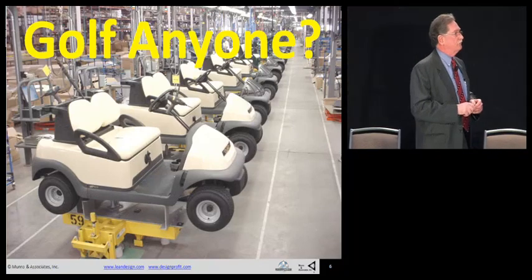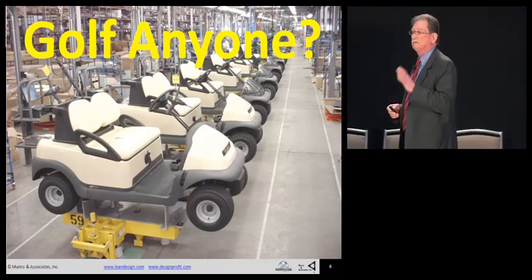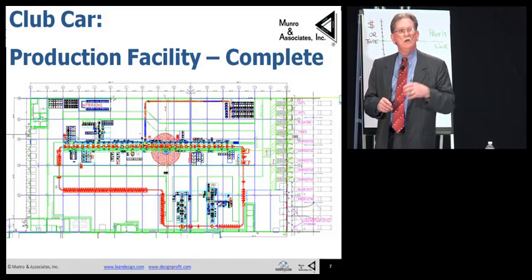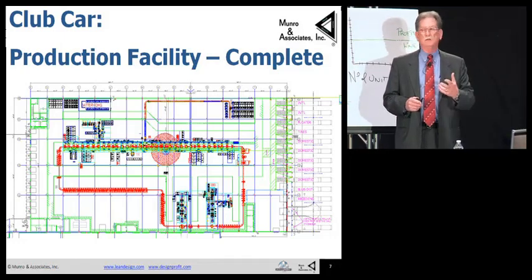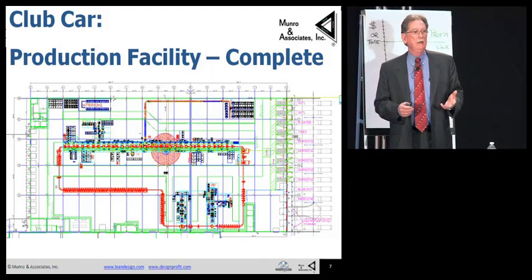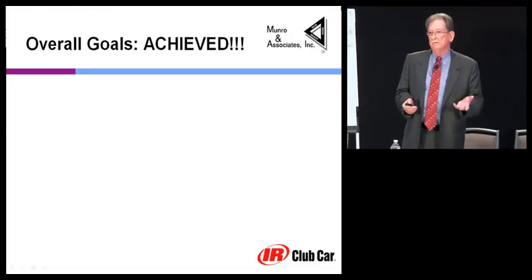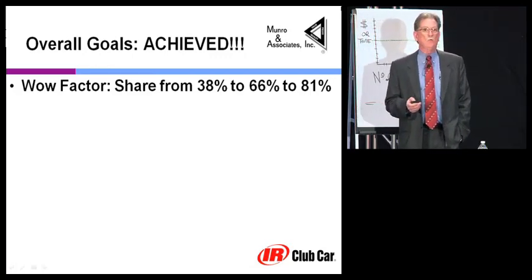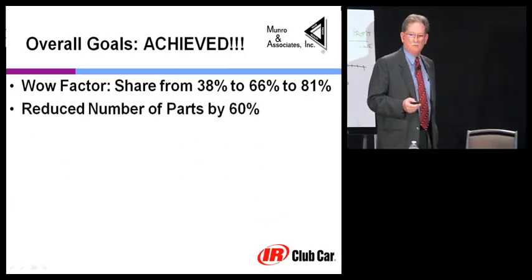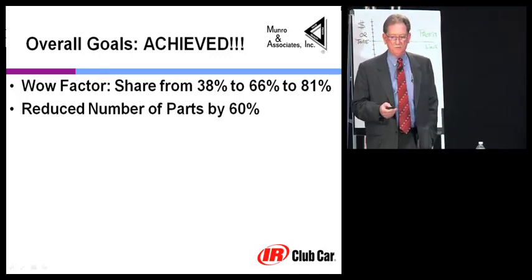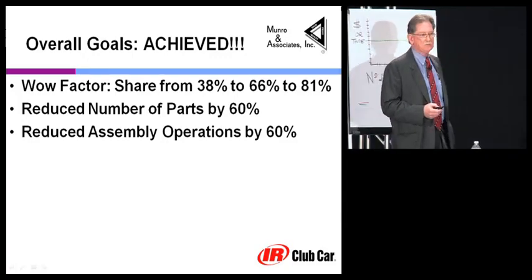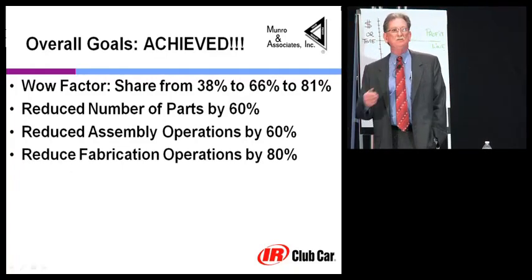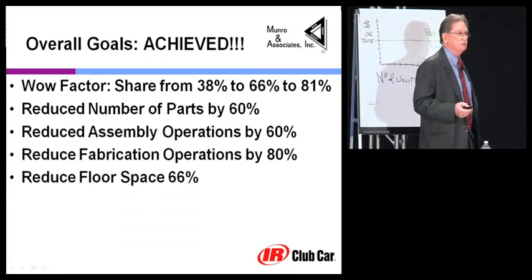For this product — the Precedent golf cart from Club Car — we did the assembly lines, and they worked really, really well. This new approach puts out twice the product that the old one did, and it does it in a third of the space. They went from 38% market share to 66 — actually to 81% for a while. Manufacturing was improved because it got rid of 60% of the parts. They reduced assembly operations by 60% — not by outsourcing, but by doing it a little bit smarter. They got rid of fabrication operations by 80%, floor space went down by 66%, and they increased their inventory turns 1,000 a year.